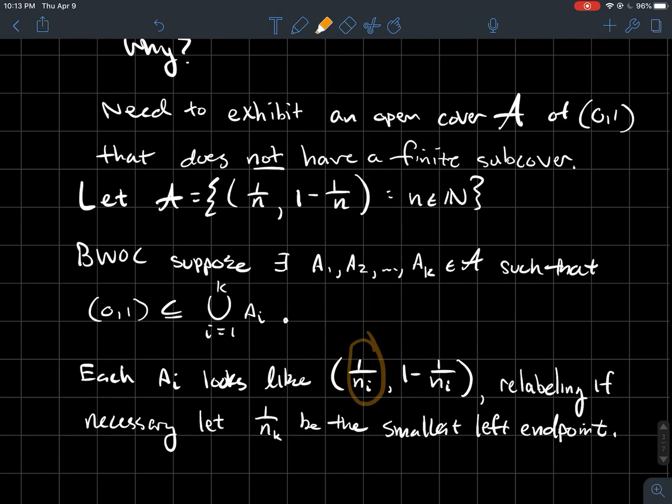It should make sense to say that relabeling if necessary, I'm going to look at one of the A's, call it A_k, the last one, relabeling if necessary, where that is the smallest left endpoint. In other words, that is the endpoint that's closest to 0. So let's pretend that 1 over n_k is what's closest to 0.